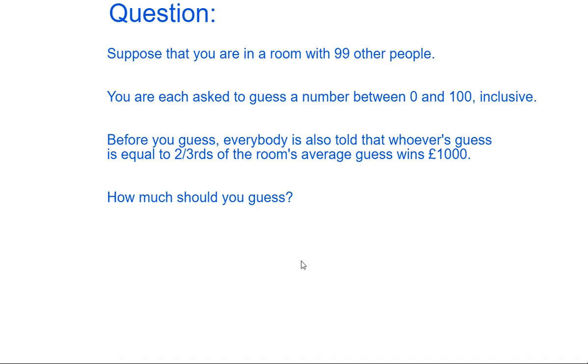So if the room's average is, for example, 30, then two-thirds of that would be 20. So if you guessed 20, then that would be correct. Obviously that's just a hypothetical example, and the average might be something different. But knowing that, how much should you guess in this example?